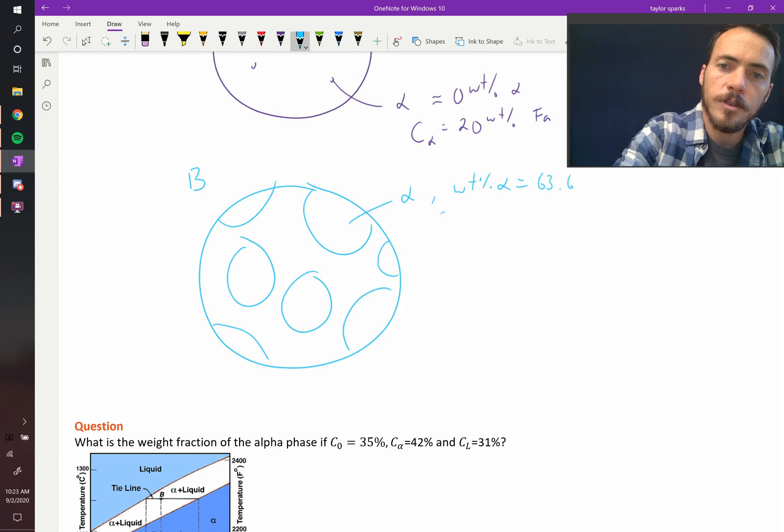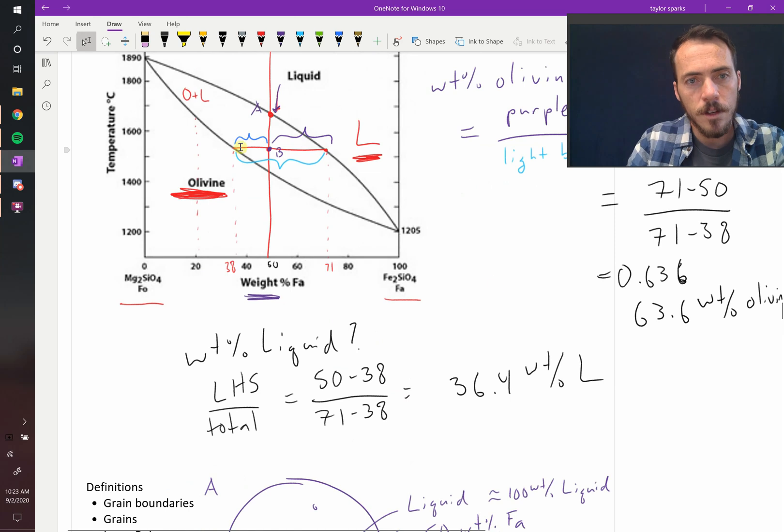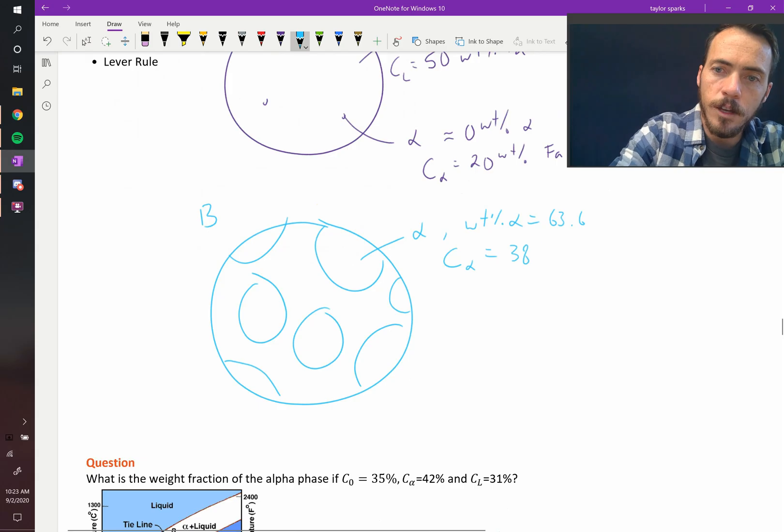And then the composition, the composition of alpha at that point, we should also write down. We did that previously. The composition is 38 weight percent pheolite, 38 weight percent pheolite.